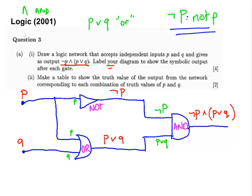Now, make a table to show the truth values of the output from the network corresponding to each combination of the truth values of P and Q. So what I'm going to do is set this up here again on the next slide. And what we're asked to do is come up with a set of truth tables for this statement here, that is NOT P AND P OR Q.